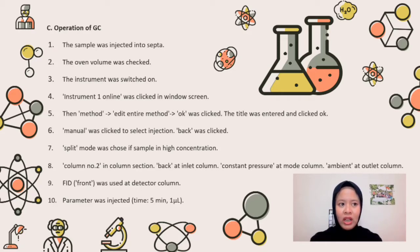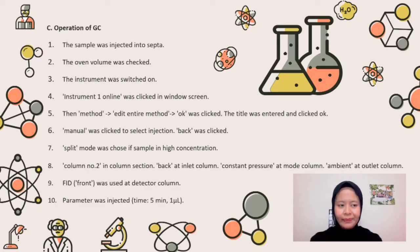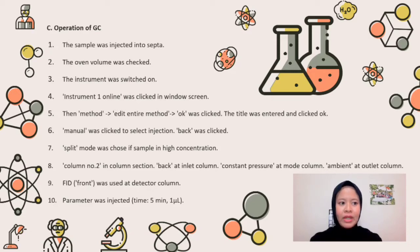Step 5: In the method menu, 'Edit entire method' was selected and all items in the column were made sure to be correct. OK was clicked. The title was entered and OK was clicked. Step 6: Manual was clicked to select injection. Back was clicked to select injection location. At the instrument, inlet was added. Back was chosen and the information was saved.